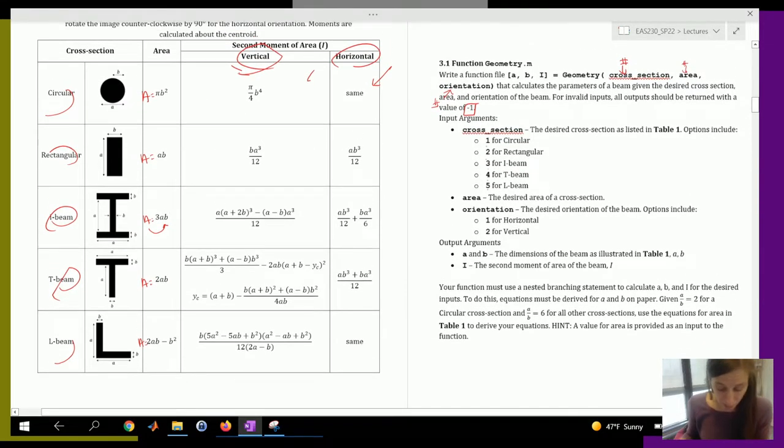So you're going to use a nested branching statement. So a branching statement to figure out the cross section, and then a branching statement inside of that to figure out your horizontal calculation. And to calculate I, which is your third output.